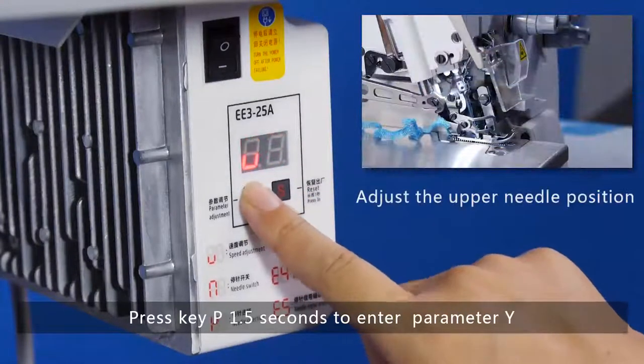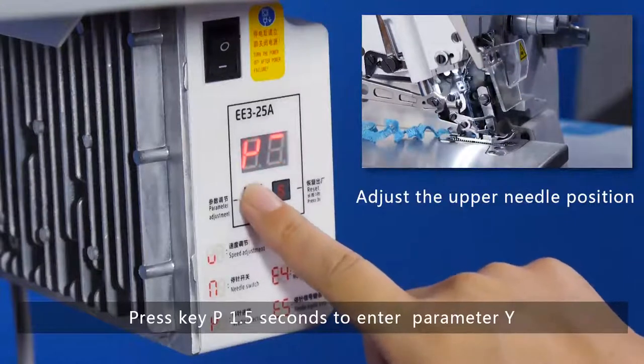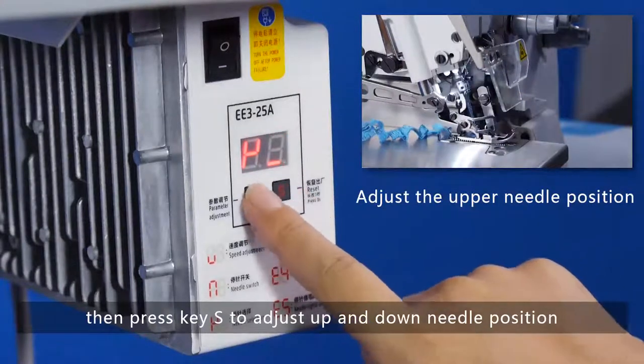Press key P 1.5 seconds to enter parameter Y, then press key S to adjust up and down needle position.